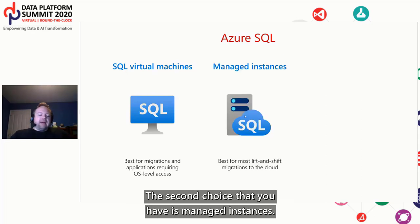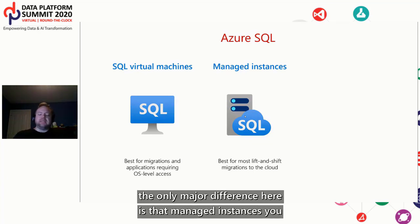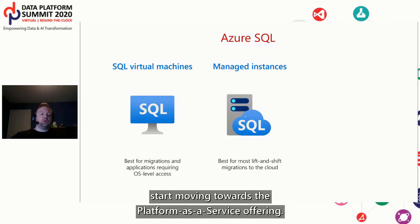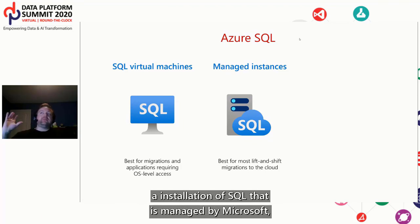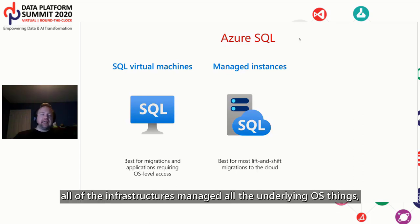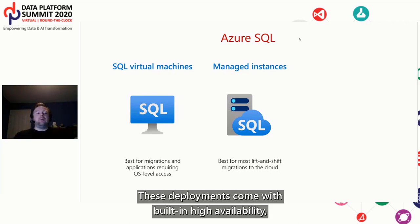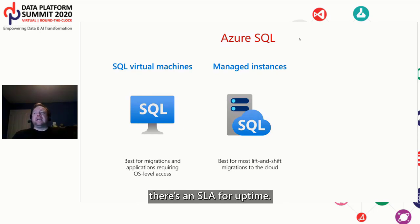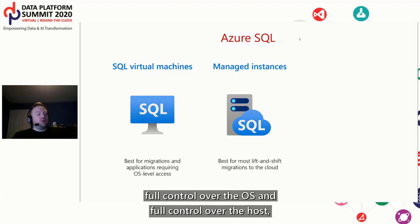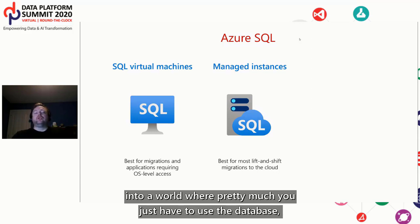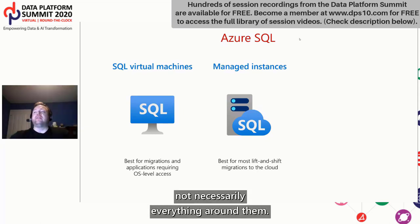The second choice is managed instances. Managed instances are very similar to virtual machines, but the major difference is that you start moving towards the platform-as-a-service offering. What you're getting is a SQL installation managed by Microsoft — all the infrastructure, the underlying OS, the versions of SQL are all managed for you. These deployments come with built-in high availability and an SLA for uptime. You start moving away from having full control over the OS and host into a world where you just have to use the database and worry about what's going on in it.